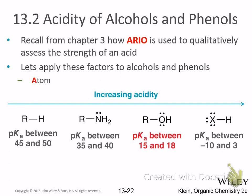Let's talk about acidity of alcohols. That was one way to make alkoxide ions — removing the hydrogen from an alcohol. As a quick review: alkane pKas are between 40 and 50. Remember, the higher that number, the weaker the acid and the stronger its conjugate base. So the conjugate base for an alkane — something like a carbanion — is a very strong base.